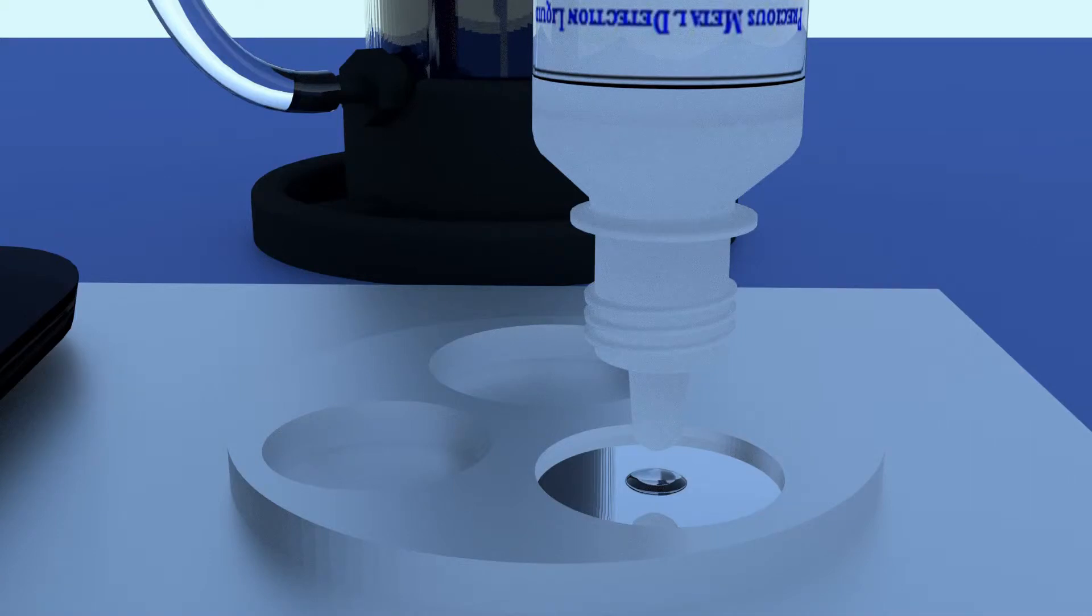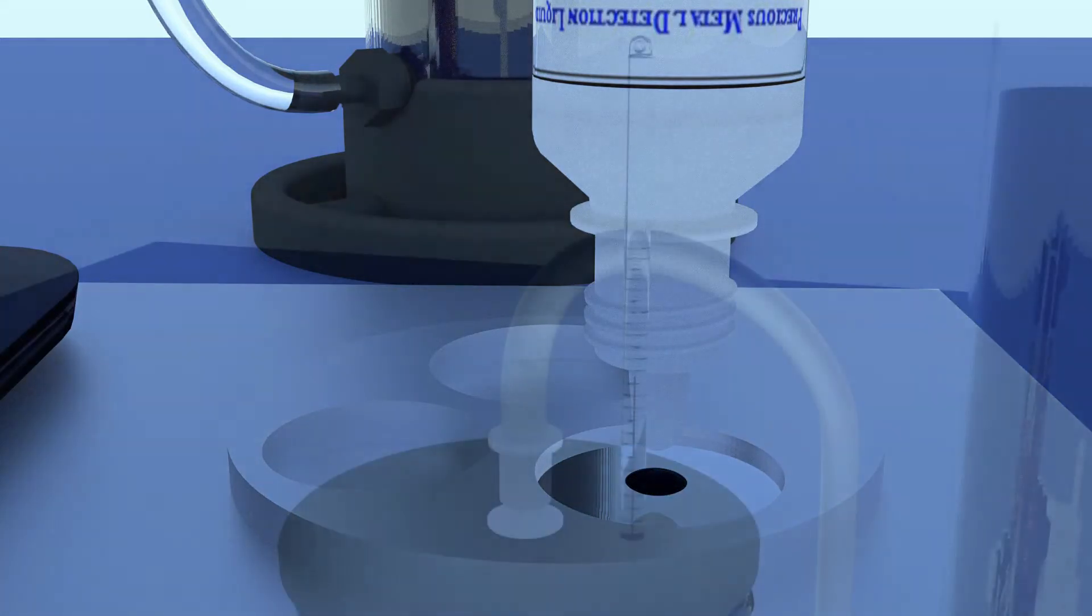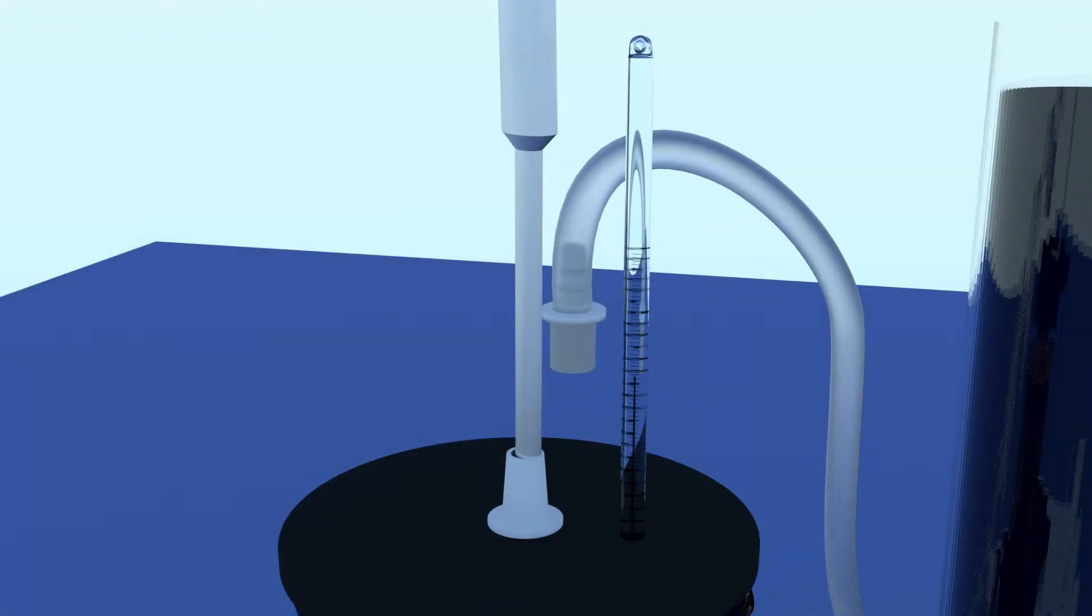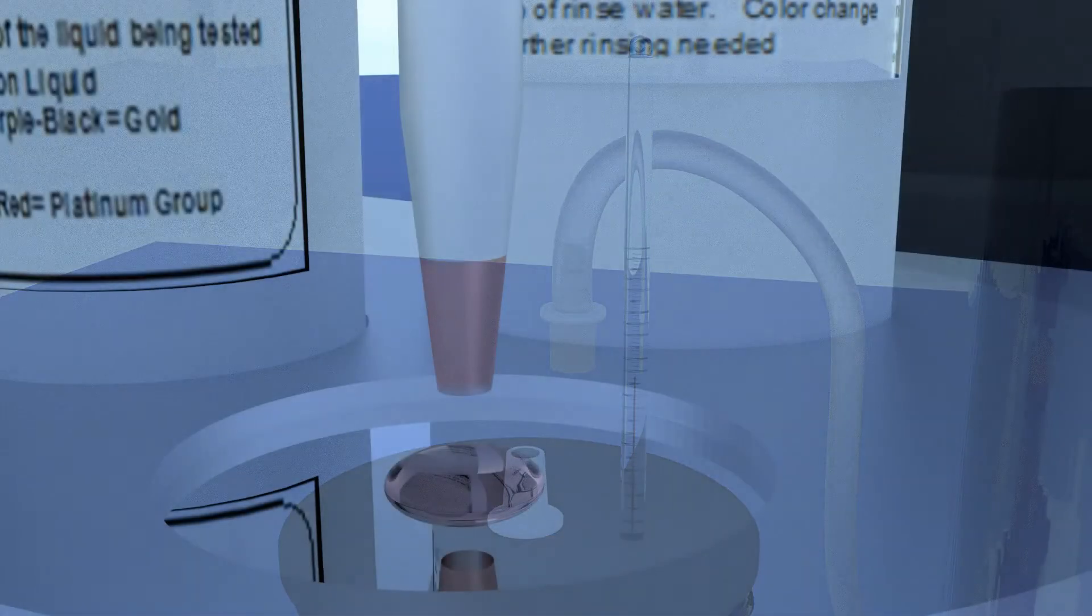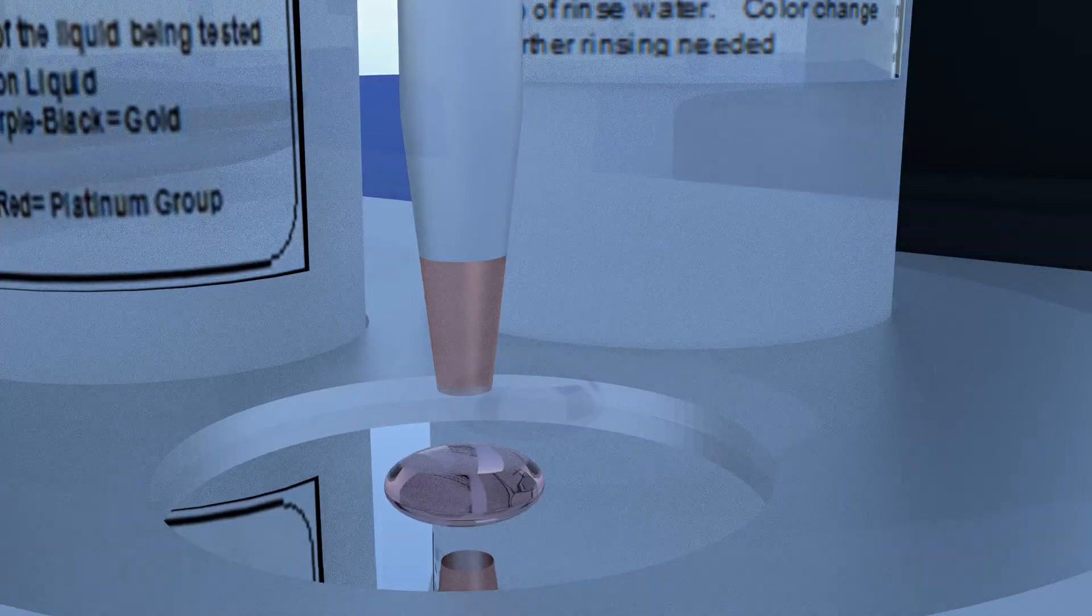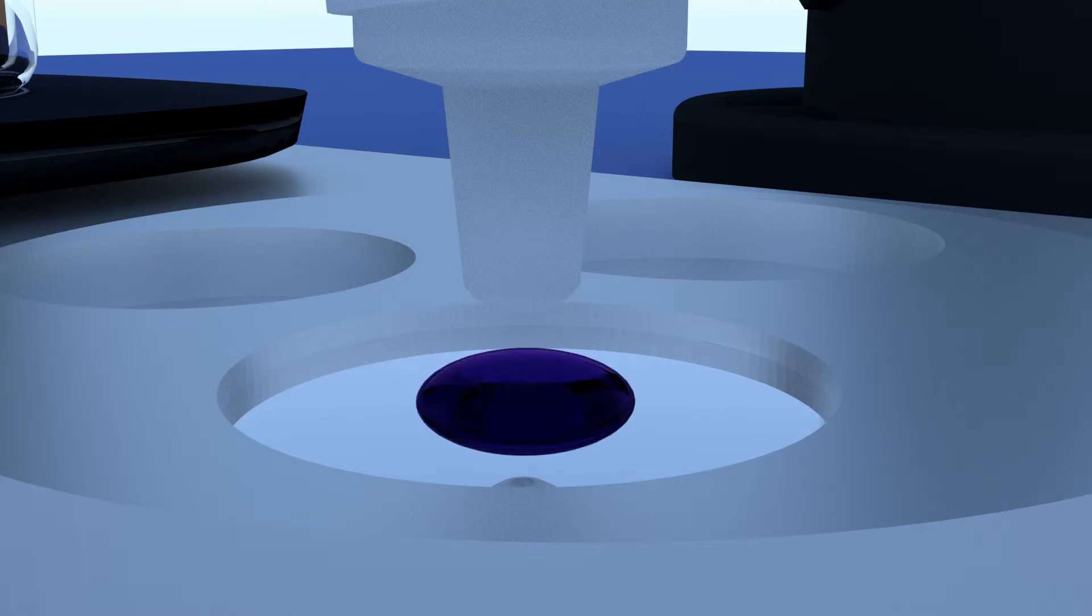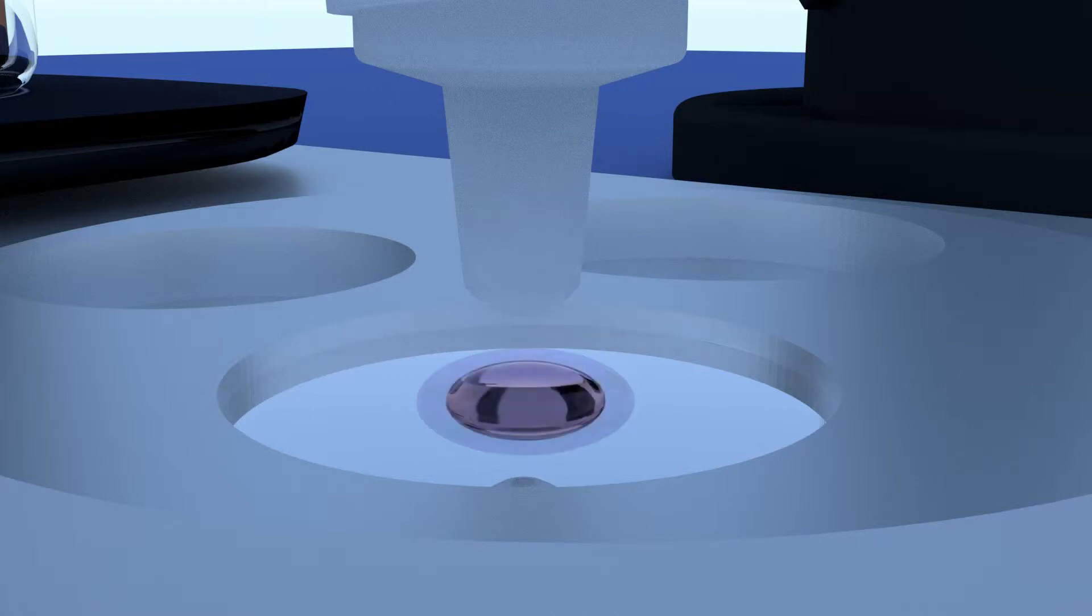This test is both highly effective as well as easy to run. Using the pipette, let's take a sample of the solution and test for the presence of dissolved gold. Place a drop or two on the spot plate. Now add a drop or two of precious metal test liquid. If any gold remains dissolved in the acid, the color will rapidly turn purple or black. When the test yields no color change, then no gold remains dissolved in solution and precipitation is complete.